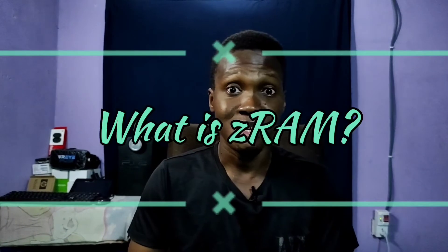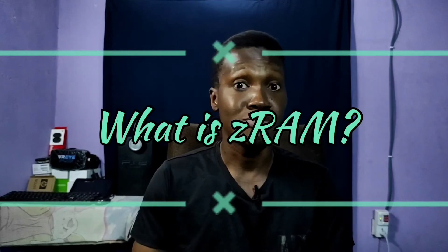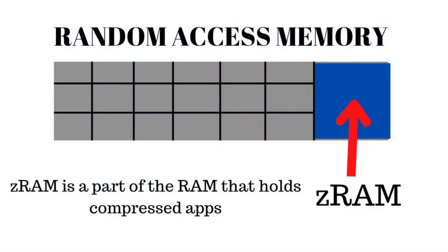So, what is ZRAM? ZRAM is a compartment of your main RAM that holds compressed apps or compressed data. So how does it work, basically?